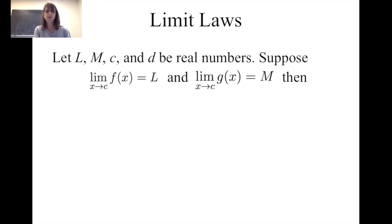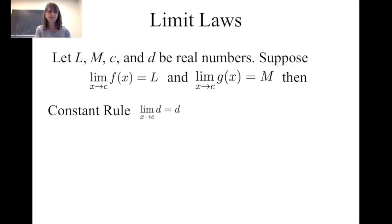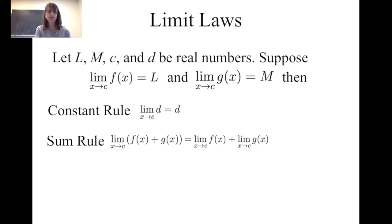If l, m, c, and d are real numbers, and the limit of f of x as x gets close to c is equal to l, and the limit of g of x as x gets close to c is equal to m, then we can make the following conclusions. The limit of a constant d as x is close to c is equal to d. The limit of a sum of two functions f of x and g of x as x is close to c is equal to the sum of the two limits: the limit of f of x plus the limit of g of x, or simply l plus m.